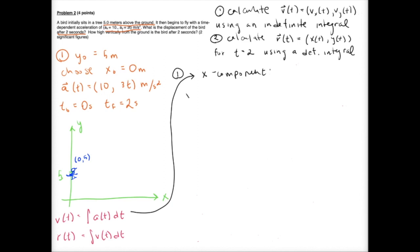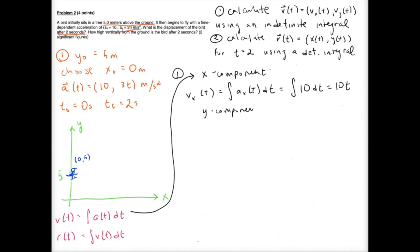First we calculate the x component of velocity using the indefinite integral: vx(t) equals the integral of ax(t) dt. It's really important to note I'm only using the x component of acceleration to calculate the x component of velocity. Our x component of acceleration is just 10, so this is an easy integral — the integral of a constant times dt is just the constant times t, so we get vx equals 10t.